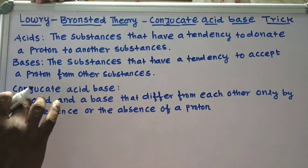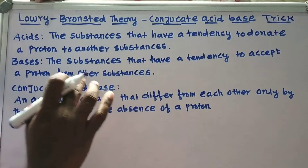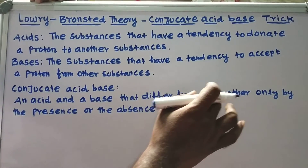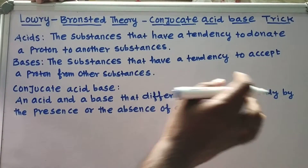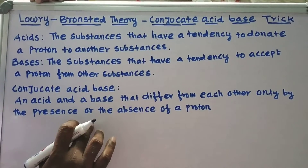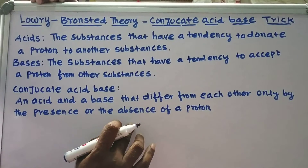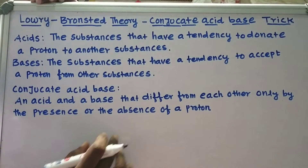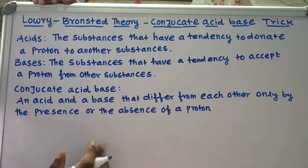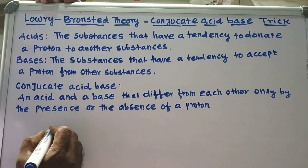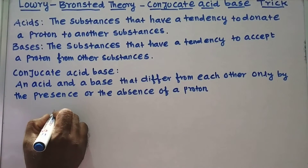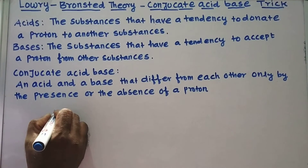Now we are going to see what is meant by conjugate acid-base. A conjugate acid and base are an acid and a base that differ from each other only by the presence or the absence of a proton. First of all, we are going to take HCl.